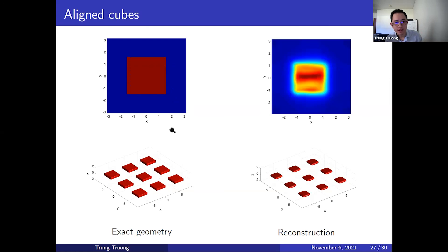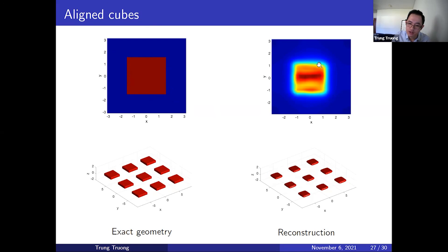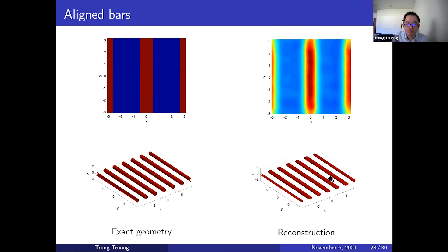The first case is aligned spheres. On top we have the cross sections and on the bottom we have the 3D pictures; on the left is the exact geometry and on the right is the reconstruction. We can see that the method reconstructed the shape of these spheres very well. The second example is aligned cubes — a more challenging example because this structure has sharp corners, which are harder to reconstruct as they require high resolution. We can see the corners clearly in the cross section, and the 3D pictures look good as well.